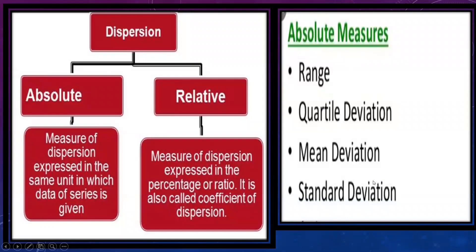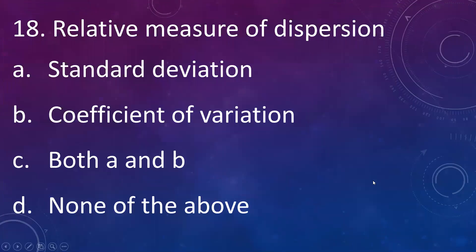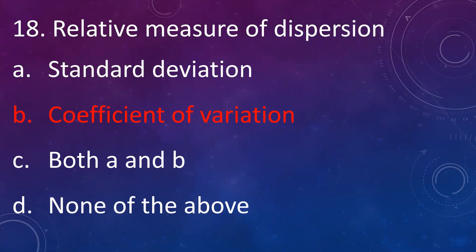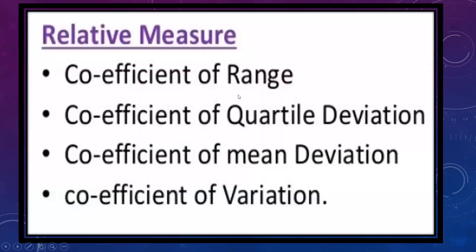Relative measure of dispersion includes: A: standard deviation, B: coefficient of variation, C: both A and B, D: none of the above. Answer is B: coefficient of variation. Relative measures of dispersion include coefficient of range, coefficient of quartile deviation, coefficient of mean deviation, and coefficient of variation.